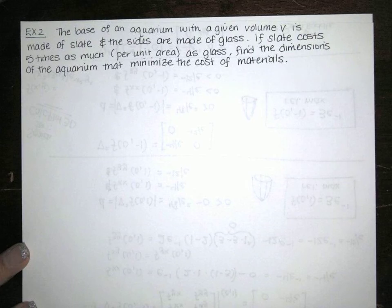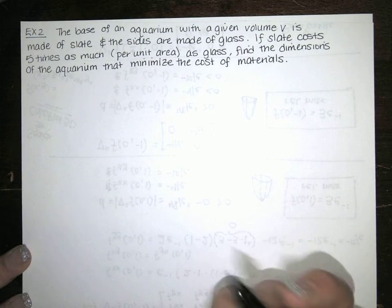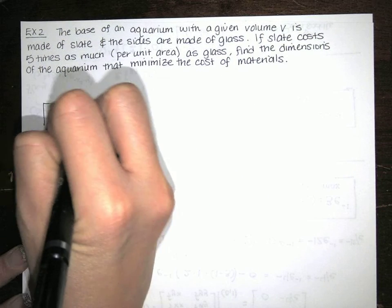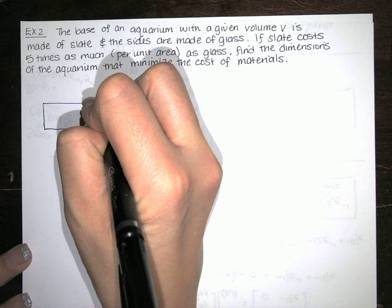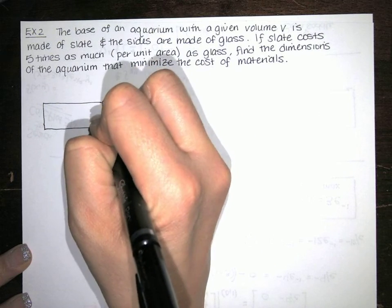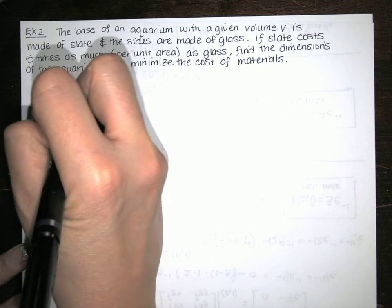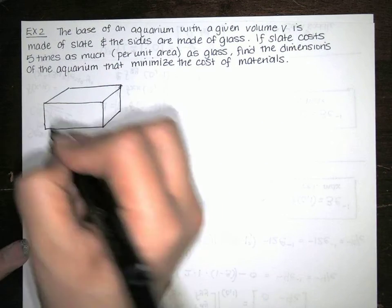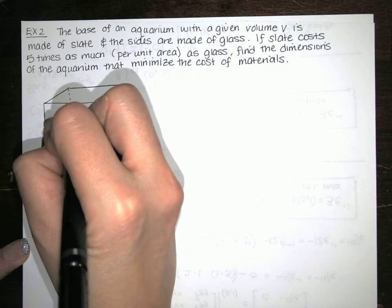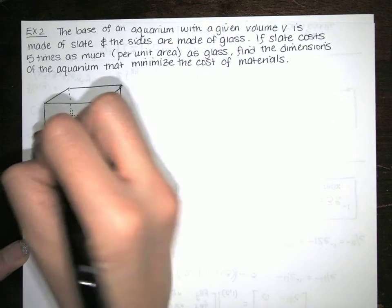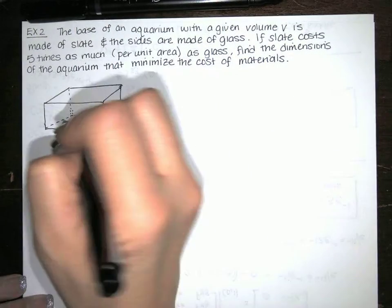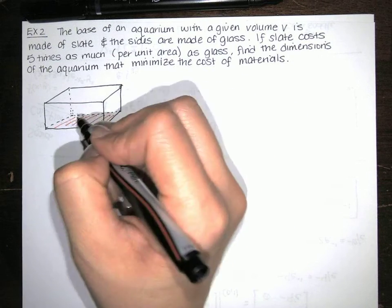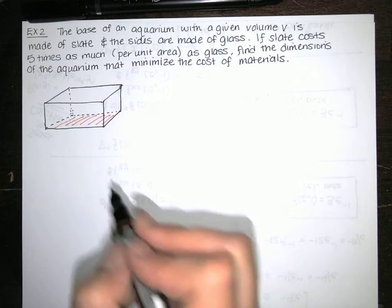We've got a rectangular aquarium, so the first thing I would do is draw a picture. This is what I usually think of when I think of aquariums — that rectangular aquarium from the pet store. The base is made of slate and the other sides are made of glass. I assume this container is open, so we've got glass on all four sides, nothing on top, but slate on the bottom.